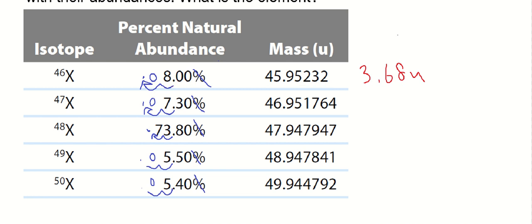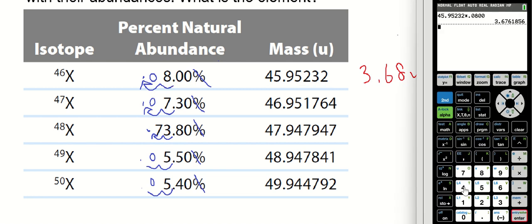All right, next one: 46.951764 times 0.0730. Again, just off that screen, I can see I have three sig figs. And so what I'm doing—all of these at the end, I can say well that one—the first number tells me I have two decimals.